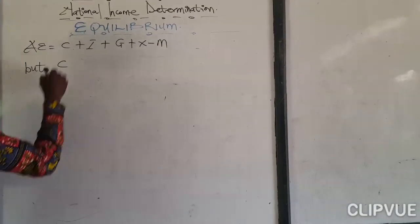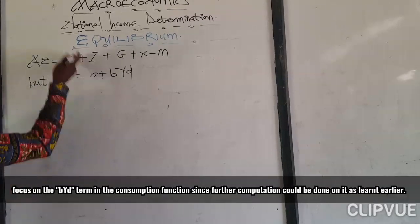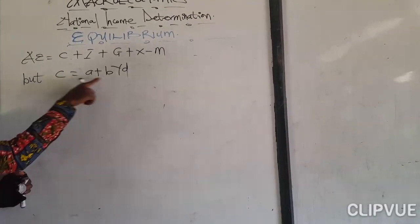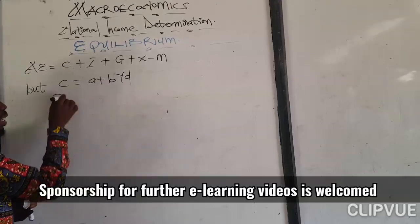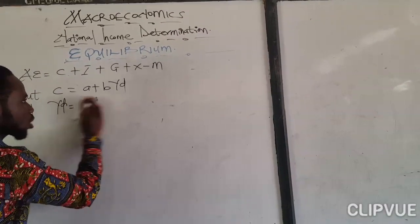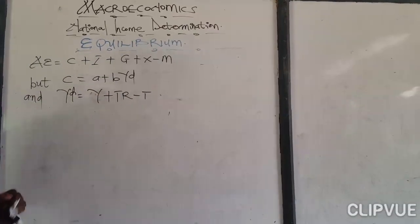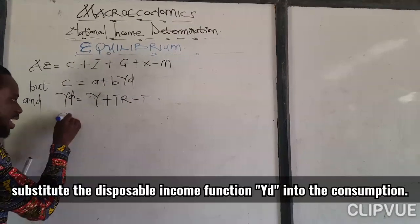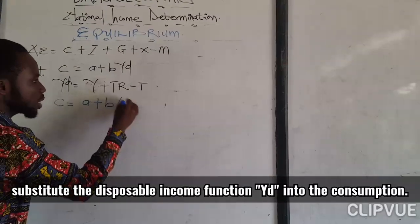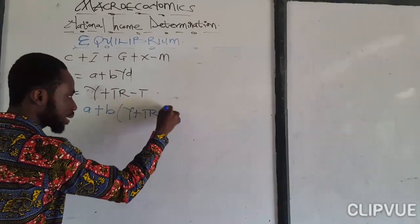We know our consumption to be A plus BYD. And our disposable income is also equal to income plus transfer payment minus tax. So our new consumption curve would be C equal to A plus B, where instead of YD, it would be Y plus TR minus T.